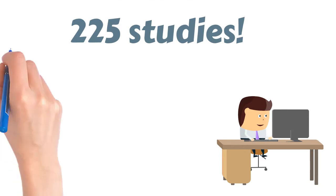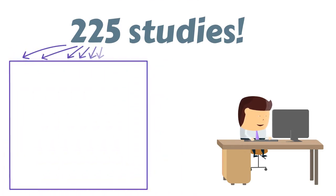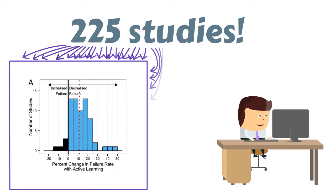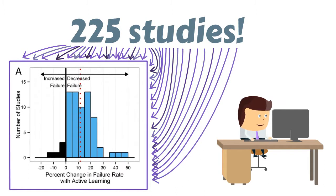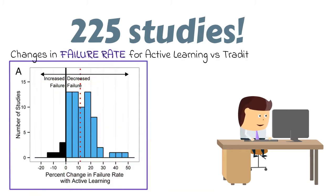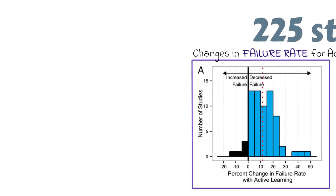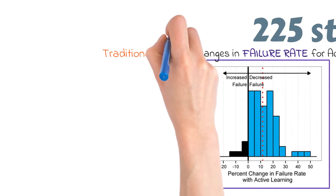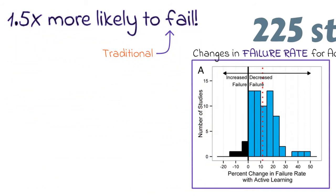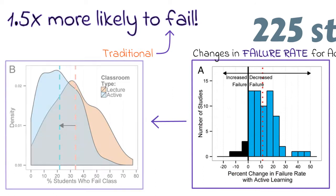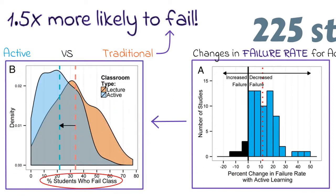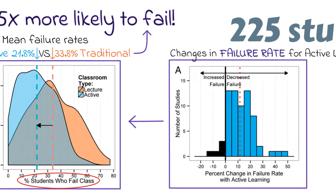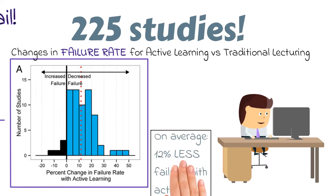Then they took the data from all of these studies and pooled them together, re-analyzing them to figure out the differences in failure rate between students who were taught with traditional lecturing only and those who were taught with at least some active learning strategies. What they found was that students in traditional lecture courses were 1.5 times more likely to fail than students in the same course, being given the same tests, but being taught with active learning strategies. On average, the active learning version of courses had 12% less failure.